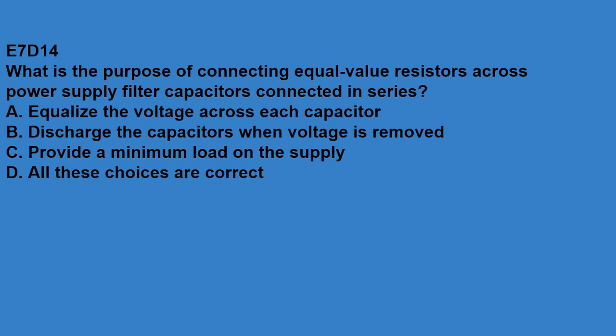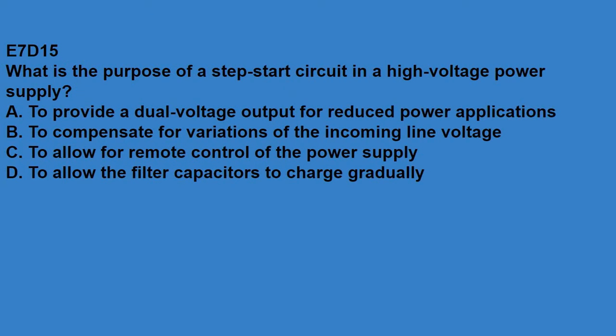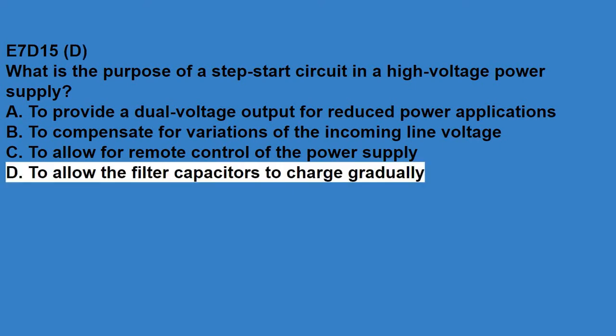E7D13, what is the equation for calculating power dissipated by a series linear voltage regulator? Voltage difference from input to output multiplied by output current. E7D14, what is the purpose of connecting equal value resistors across a power supply filter capacitors connected in series? All of these choices are correct: equalize the voltage across each capacitor, discharge the capacitors when voltage is removed, and provide a minimum load on the supply. E7D15, what is the purpose of a step-start circuit in a high voltage power supply? To allow the filter capacitors to charge gradually.